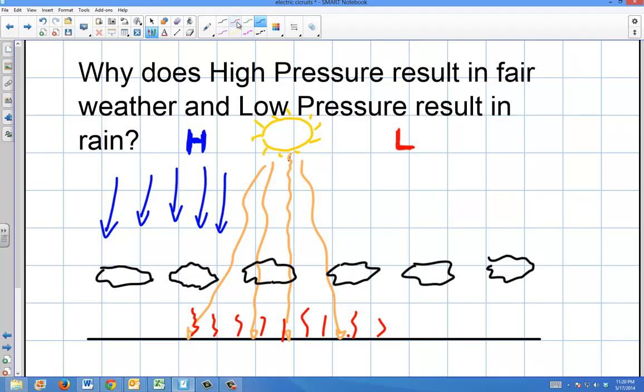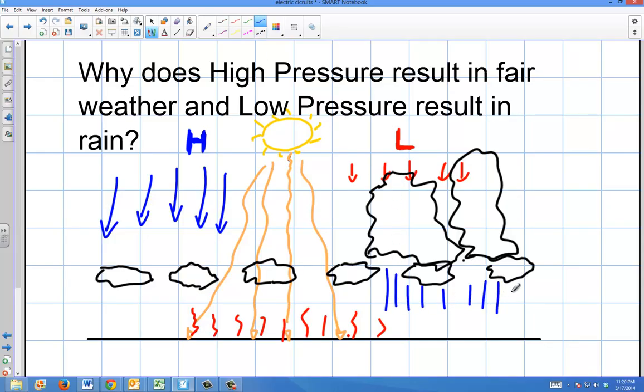And low pressure, there's just not as much pressure pushing down on the parcels of air. So they can rise higher, and create these thunderstorm clouds, because there's just nothing pushing down upon them, and then they can create a lot of rain. So that's why, when you have low pressure, it's associated with thunderstorms.